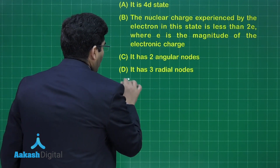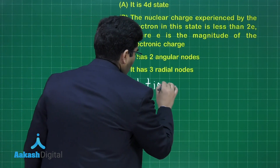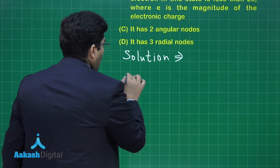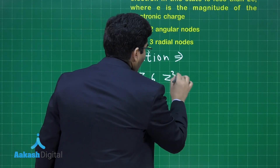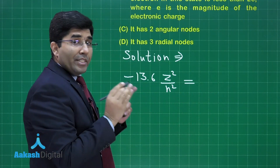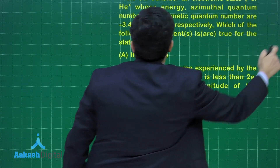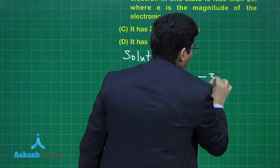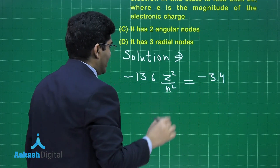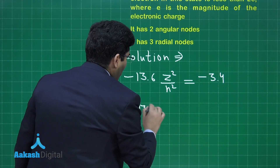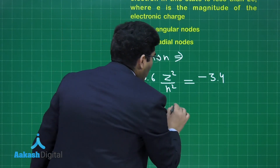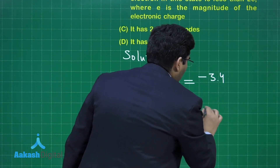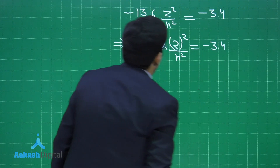Let's solve it. The formula for energy according to Bohr's theory is minus 13.6 Z² / n², and that equals the given value of minus 3.4 electron volts. For He+, Z equals 2, so we write minus 13.6 × (2²) / n² = minus 3.4. Solving for n, we get n equals 4.